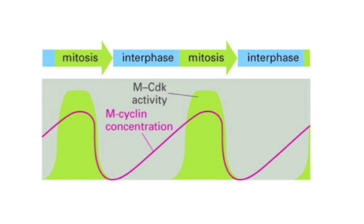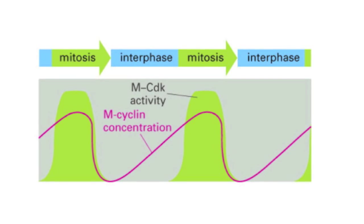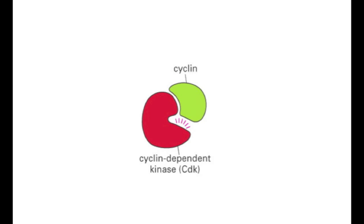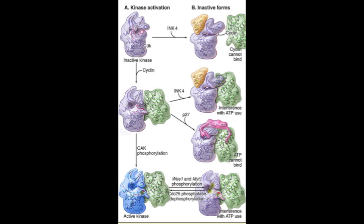Cyclin-dependent kinases regulate the cell cycle, but such regulatory function depends on a CDK associating with a cyclin subunit. CDKs themselves are also regulated both positively and negatively. Without cyclin bound, the catalytic active site of a CDK is located in a deep cleft between the N-terminal and C-terminal domains, where it is blocked by a flexible T-loop.